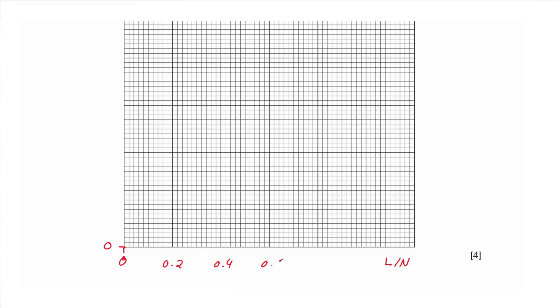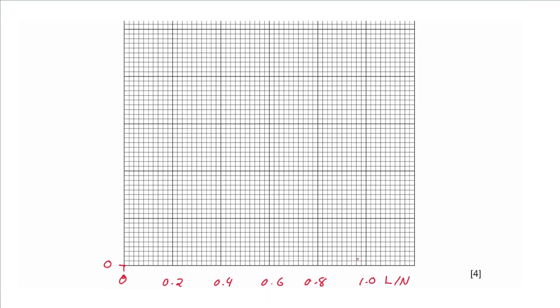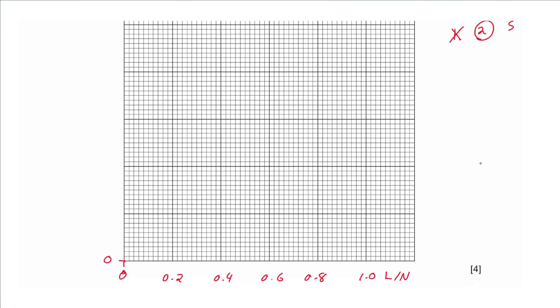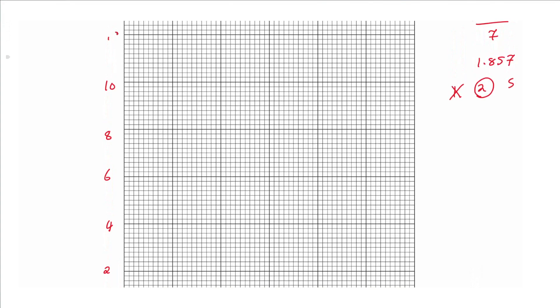For the y-axis, the maximum value is 13 and minimum is 0, with seven divisions available. Dividing 13 by 7 gives approximately 1.857, so we choose a scale of 2, giving: 0, 2, 4, 6, 8, 10, 12 at the last division.